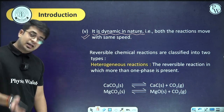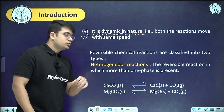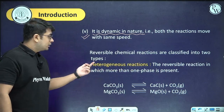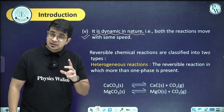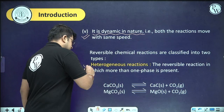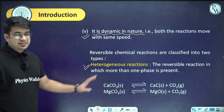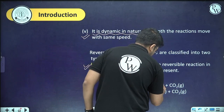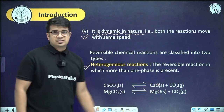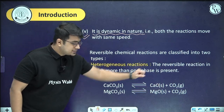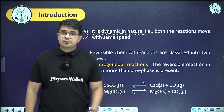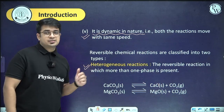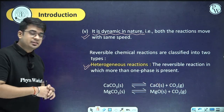Reversible chemical reactions can be classified into heterogeneous reactions, where more than one phase is present. For example, CaCO₃(s) ⇌ CaO(s) + CO₂(g) — solid is present along with gas. If more than one phase is present, it is a heterogeneous type reaction. MgCO₃(s) ⇌ MgO(s) + CO₂(g) is another example with two different phases.